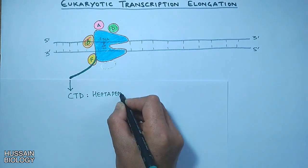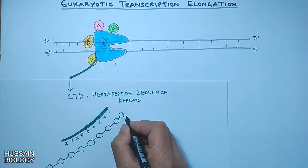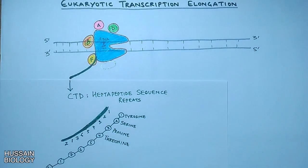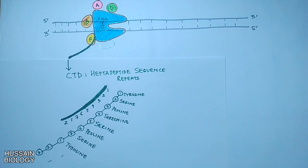It's a heptapeptide sequence repeat. The heptapeptide sequence consists of tyrosine, serine, proline, threonine, serine, proline, serine and then the same sequence repeats.